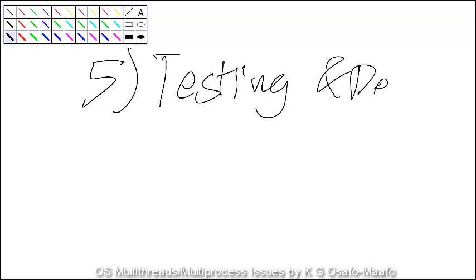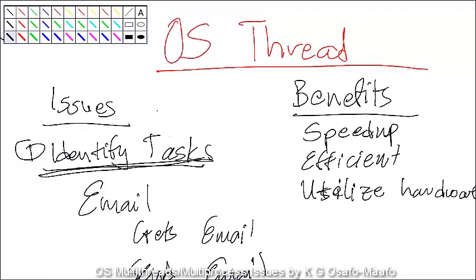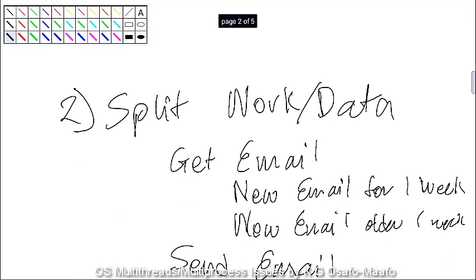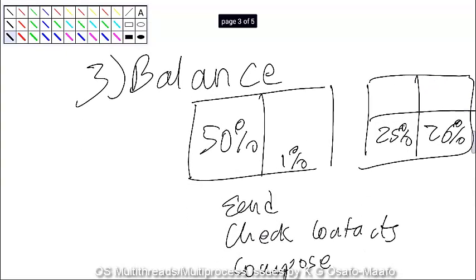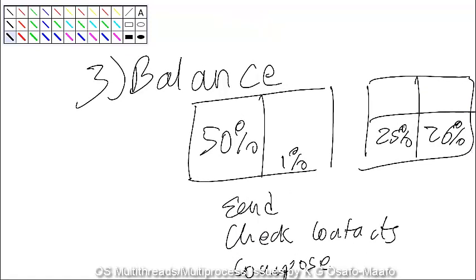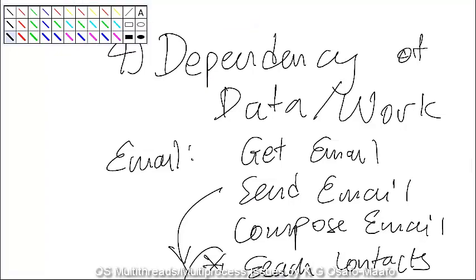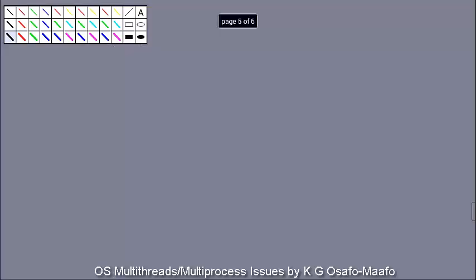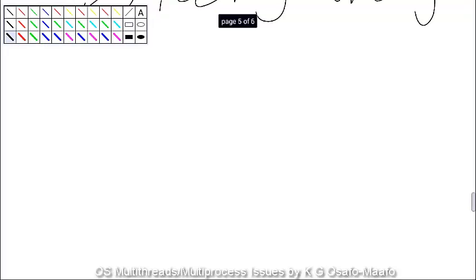The last issue is testing and debugging. You don't have to wait until the end to test — good code starts with planning. You need to identify tasks, determine how you're splitting work (not just trial and error), think about balance, and know about dependencies. If you understand all parts of your program, you can test and debug effectively.